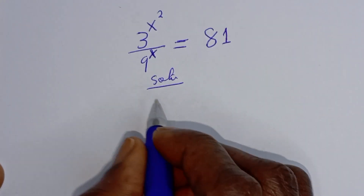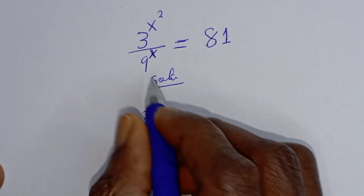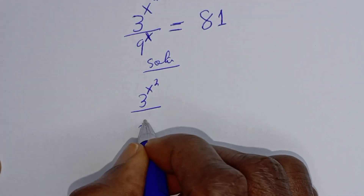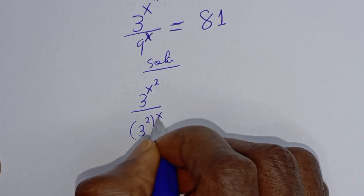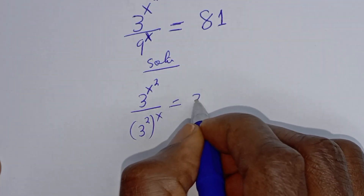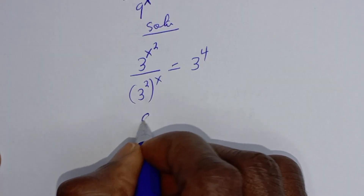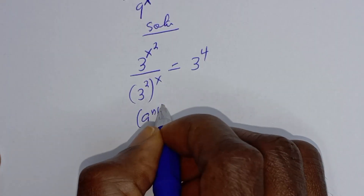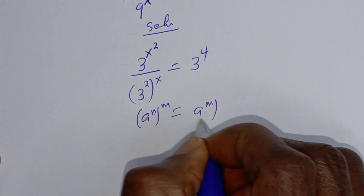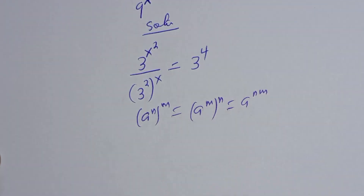This is 3 raised to power x squared divided by 9 raised to power x. Note this rule: if you have a raised to power n, to the power of m, this is equal to a raised to power n times m.